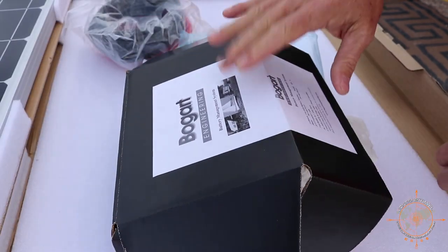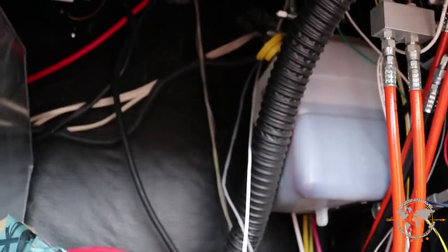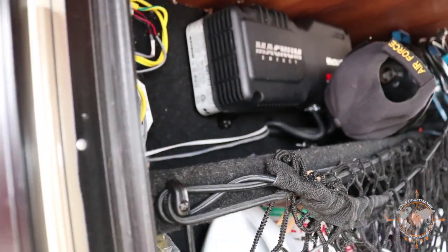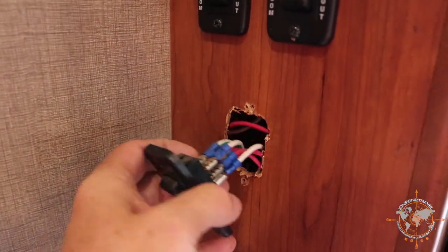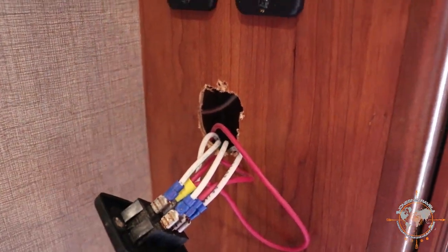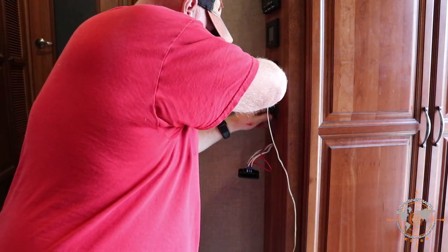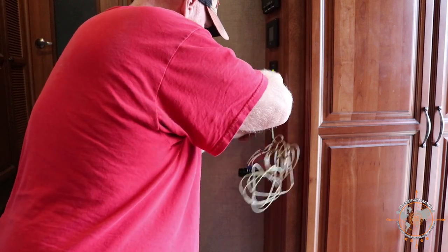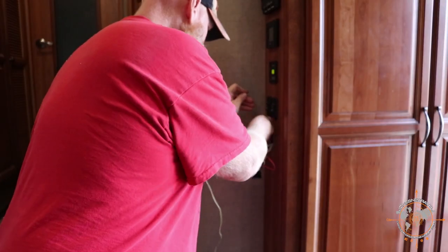We're going to get busy here tearing some stuff apart. We got some wire to run and then we're going to get this Bogart equipment installed. Okay, we got a decent start. We got the communication wires started up through there and through the cargo bay over here. Now we just have to go in and get them fished up the wall. Got it. All right, okay Tommy, pull the wires.